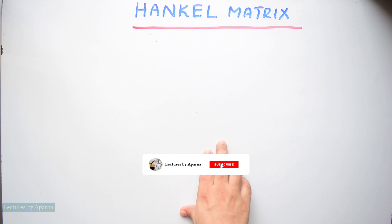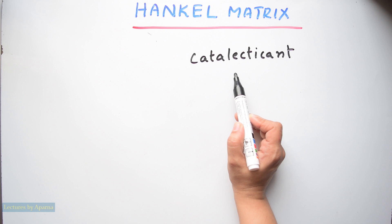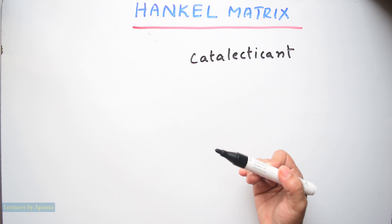Another name for Hankel matrix is catalectic matrix. A Hankel matrix is a square matrix in which each ascending skew diagonal from left to right is a constant. I will show an example of Hankel matrix.